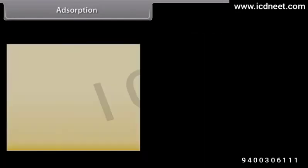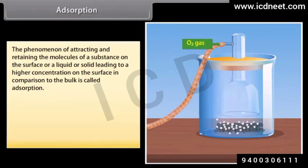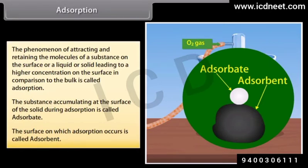The phenomenon of attracting and retaining the molecules of a substance on the surface of a liquid or solid, leading to a higher concentration on the surface in comparison to the bulk, is called adsorption. For example, when oxygen gas is taken in a closed vessel containing powdered charcoal, the pressure inside the enclosed vessel decreases. This is due to adsorption of the gas molecules on the surface of charcoal. The substance accumulating at the surface of the solid during adsorption is called adsorbate. The surface on which adsorption occurs is called adsorbent.